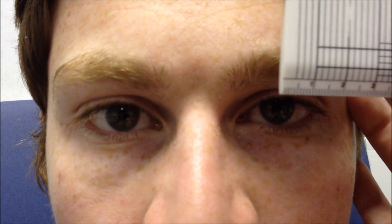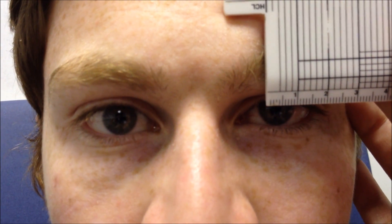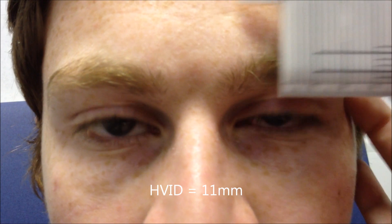The first thing we're going to measure is the horizontal visible iris diameter, or the HVID. You just want to use your ruler for this, just instruct the patient to look at you, just place it against the right, that's about 11 millimeters.